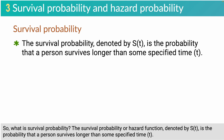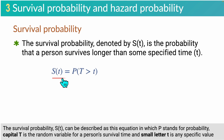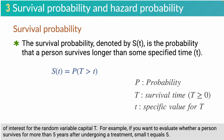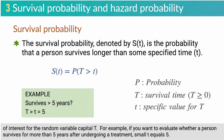What is survival probability? The survival probability, denoted by S(T), is a probability that a person survives longer than some specified time. S(T) can be described as an equation in which P stands for probability. Capital T is the random variable for a person's survival time, and small letter t is any specific value of interest for the random variable T. For example, if you want to evaluate whether a person survives longer than 5 years after undergoing a treatment, small t equals 5.